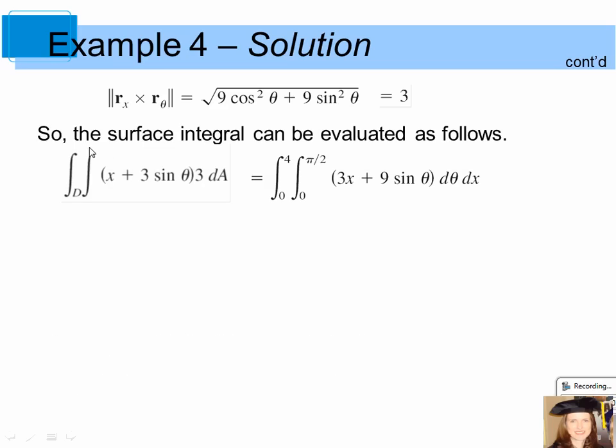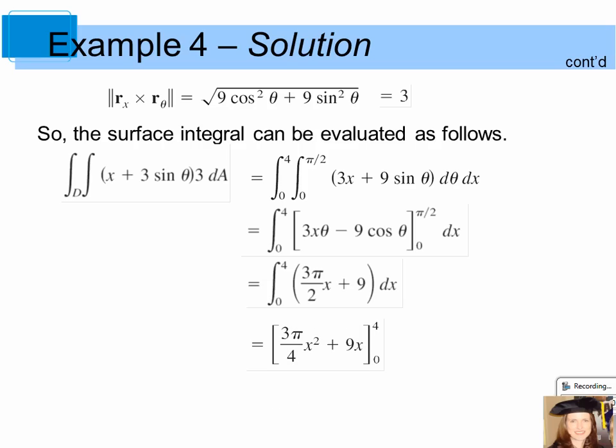So the surface integral can be written as x plus 3 sine theta, we make the substitutions, 3 dA, and then our bounds for theta and the bounds for x go from 0 to pi over 2 and 0 to 4. Evaluate the inside integral and simplify, and then you get a single definite integral. When you evaluate that and simplify, your result is 12 pi plus 36.